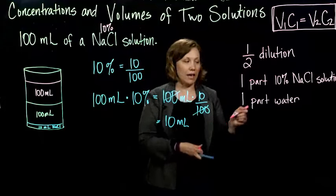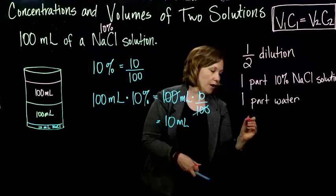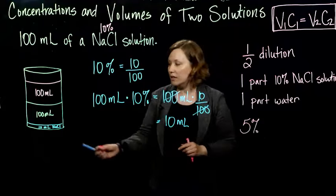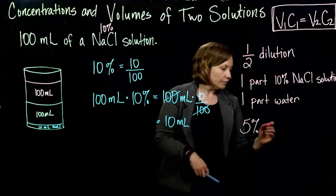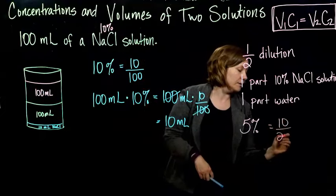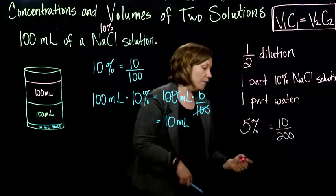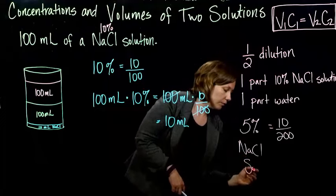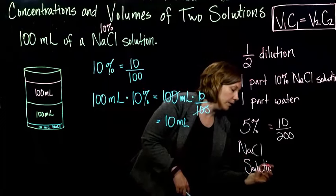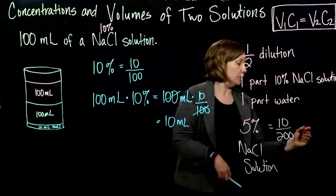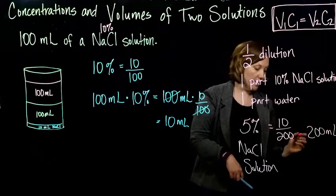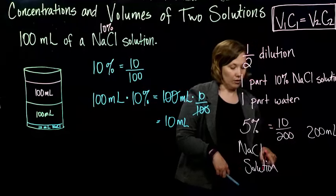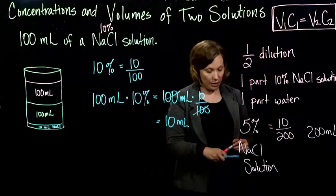Which means I now have a 5%, how did I figure that out? 10 divided by 200. I guess I should write that down. So now I have a 5% concentration.